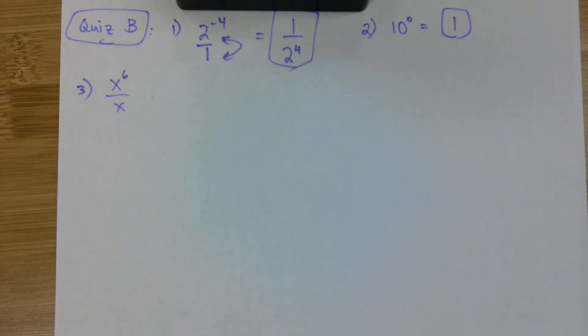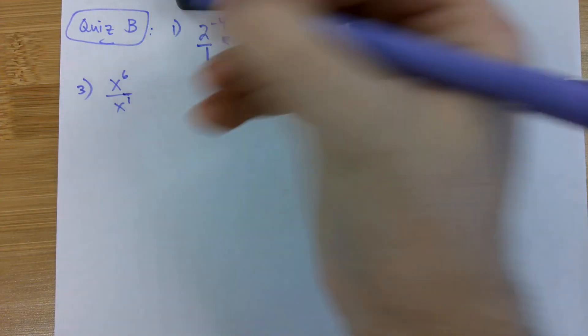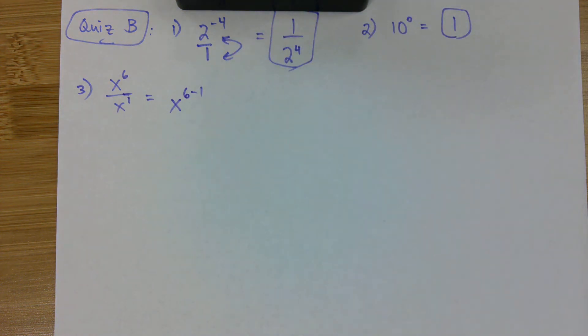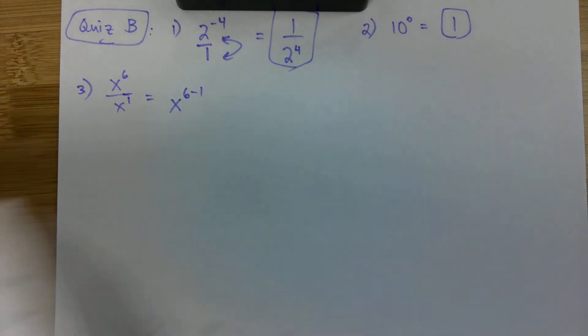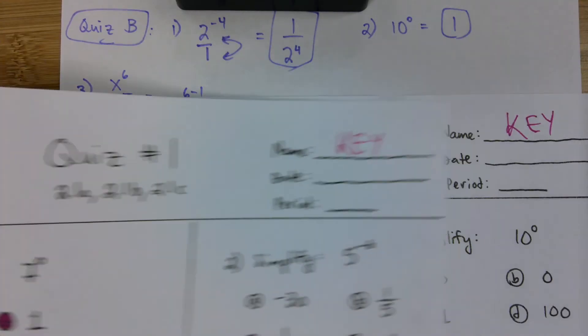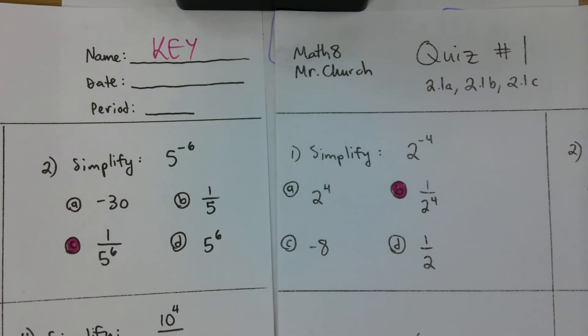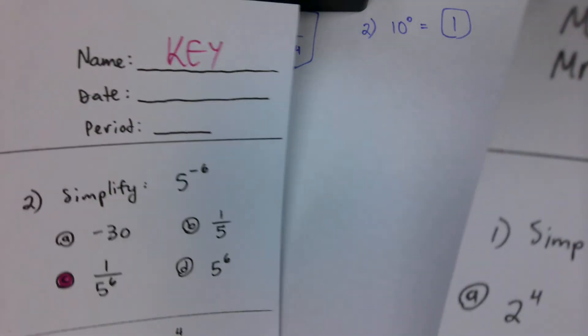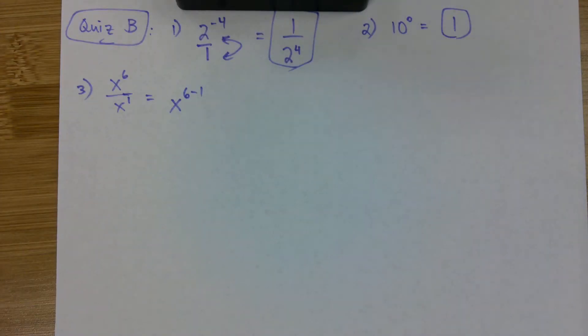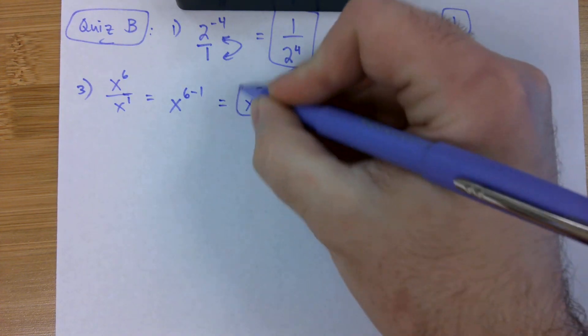Number three, we got X to the sixth over X to the one. And then we're going to subtract downward. Keep in mind, although you had different questions, they were the exact same difficulty. Simplify 10 to the zero, seven to the zero. If you know it, you know it. If you don't, you don't. That doesn't change the difficulty. Five to the negative six, two to the negative four. Same process, just different numbers. Number four and number three are the same, just different numbers. They're just different numbers, but you're required to know the same things for both of them. So, they're the same. And this gives us X to the fifth.